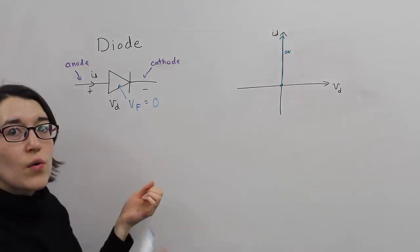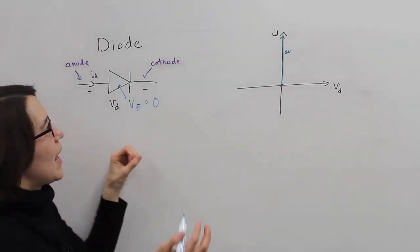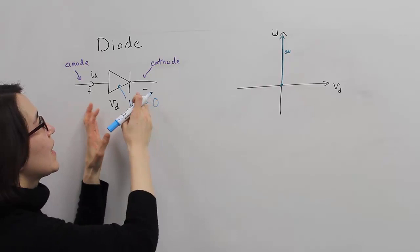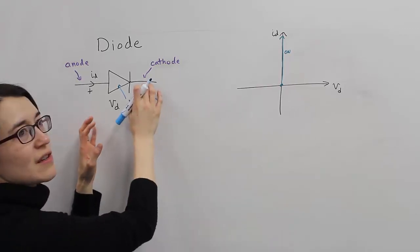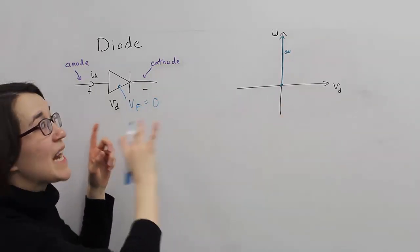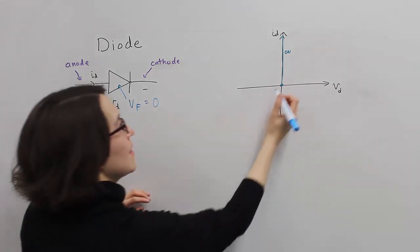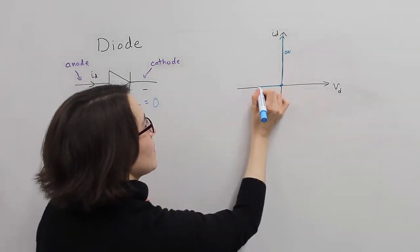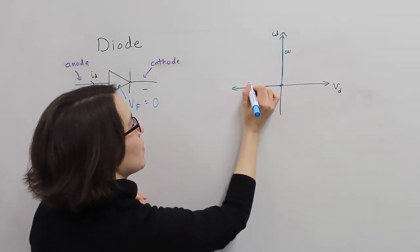When it's off, there's no current. So the current is zero. And it can block any voltage. So if this voltage is higher than this voltage, it can block any voltage in the ideal case. So we would draw that this way. Here. This would be off.